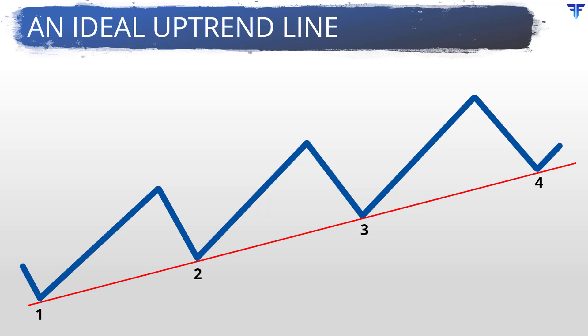This is how an ideal uptrendline looks like. The bottoms at points 3 and 4 stop right near the vicinity of the uptrendline before reversing higher. However, markets are far from perfect and do not always behave in an expected manner. Often, once you draw a trendline by connecting two important points and project it into the future, the price move can get quite steep, causing that trendline to be untested for a long time. In such a case, you will need to draw an internal trendline to account for the acceleration of the trend.